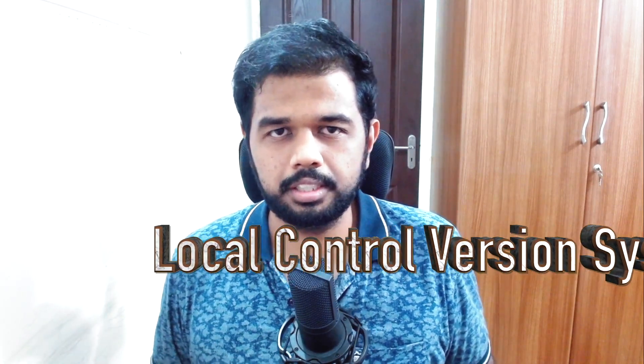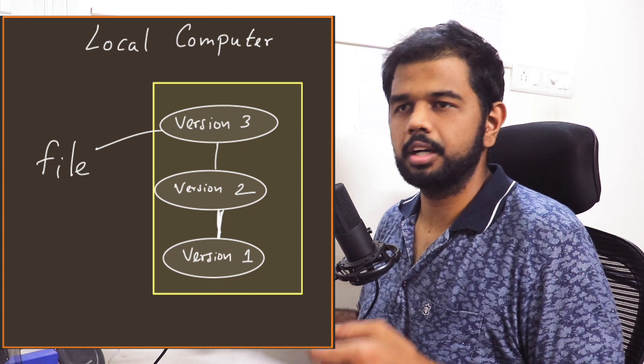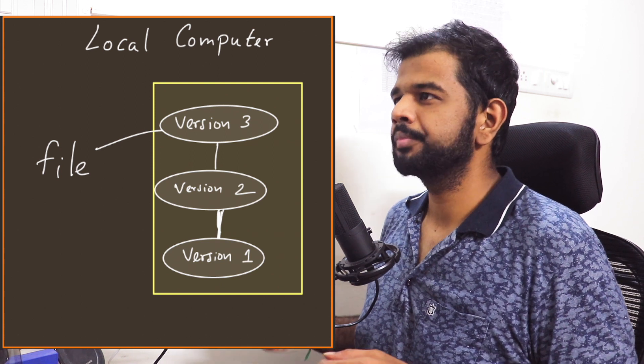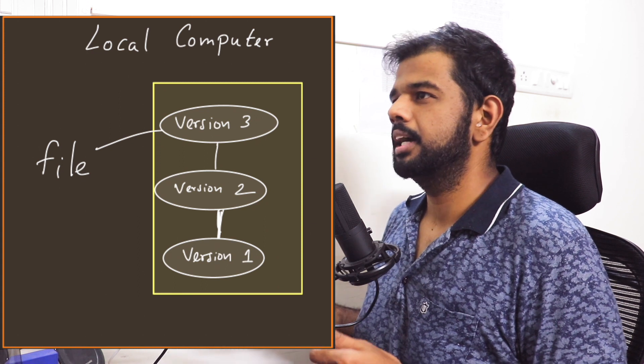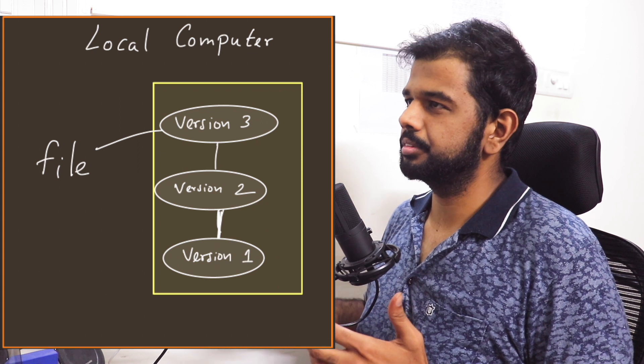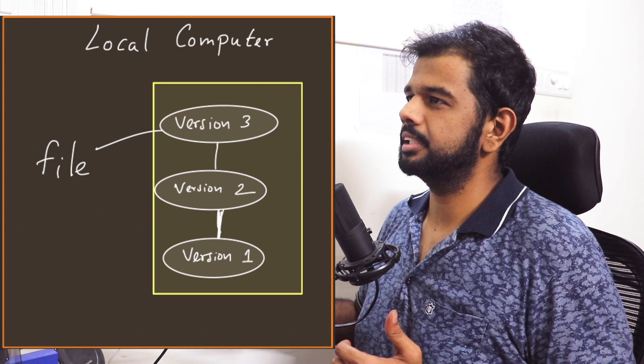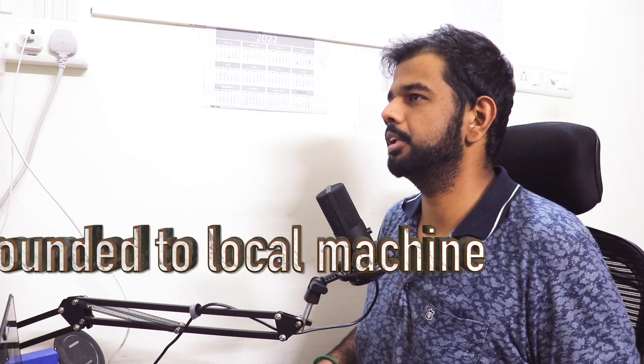We can handle the versioning. The first one is the local version control system. In a local version control system, there is a folder — let's say version 1 — and there is a file. If you want to modify the file, then we create another folder, let's say version 2, then we update the file. If you want to update it with a positive update, we can roll back. But if it is a negative update, there are many drawbacks. You back up in a new folder, and once you want to roll back, you replace the file to move to the other version.